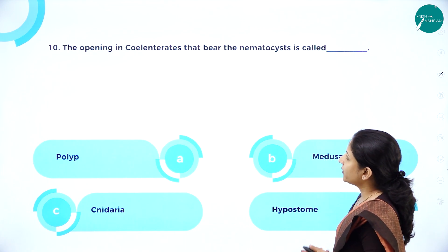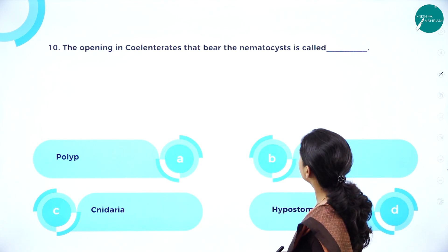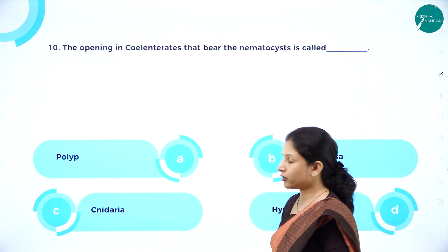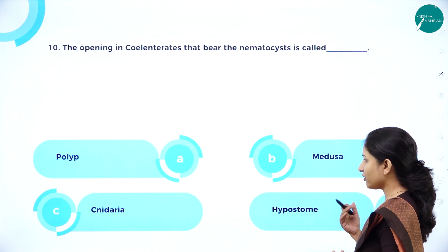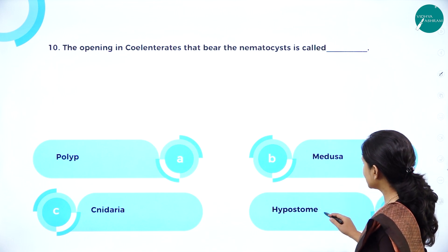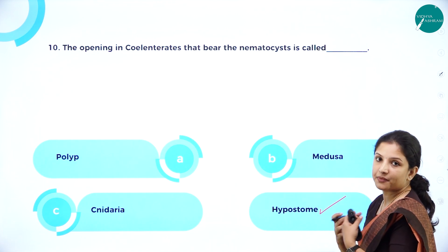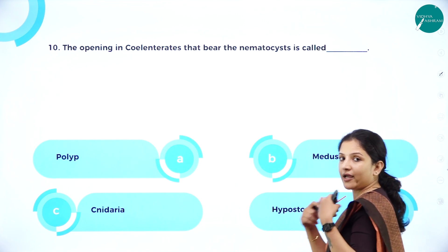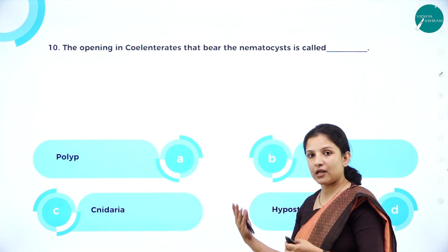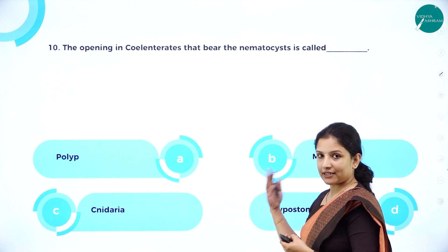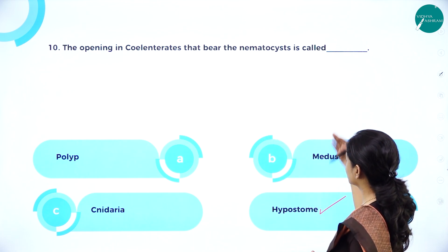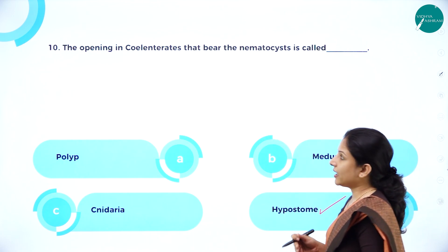Next: The opening in coelenterates that bears the nematocyst is called — polyp? No, polyp is a body form. Medusa? No, that is also a body form. Cnidaria? No, that is a name for the phylum. The answer is hypostome — it is the opening present in the mouth region from where the tentacles arise, and it is in these tentacles that the nematocysts or cnidoblasts are present. So the opening bearing the nematocyst is called the hypostome.